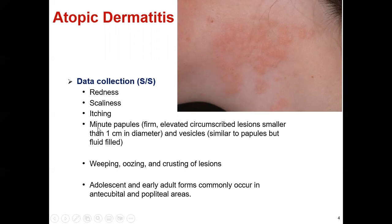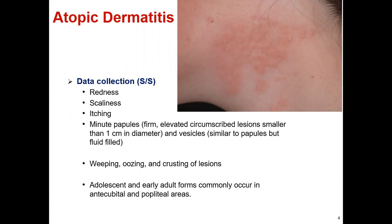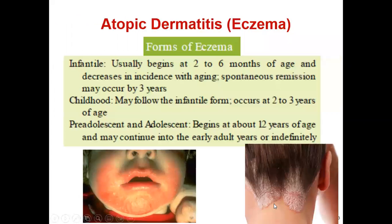Also, minute papules and vesicles are present. Papules are elevated circumscribed lesions, small in size but filled with fluid content. Sometimes oozing occurs in the lesion, resulting in crust formation.